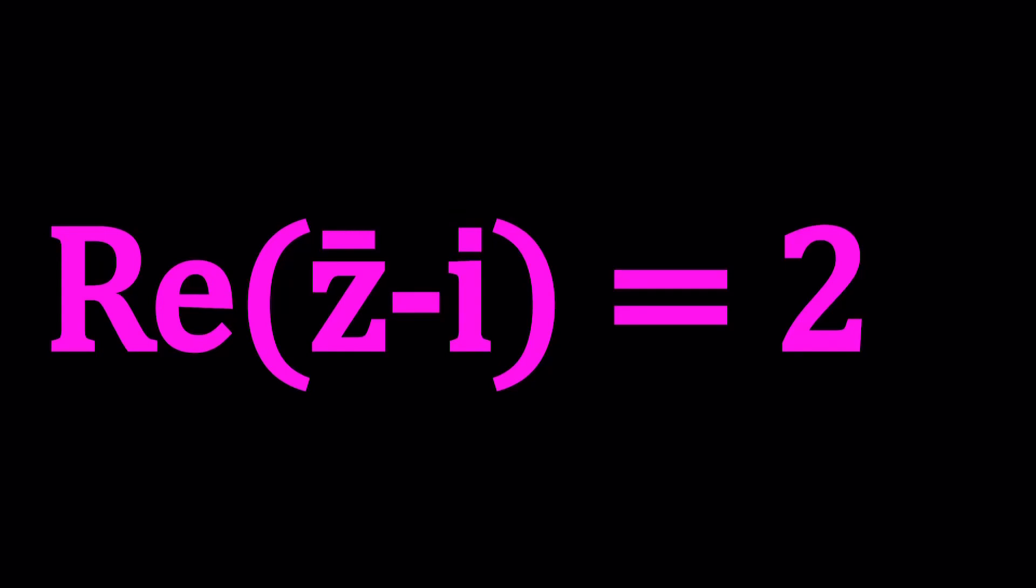Hello everyone, in this video we're going to be solving a locus problem. We have the real part of z bar minus i equals 2 and we're going to be solving for z values.